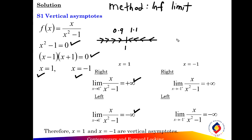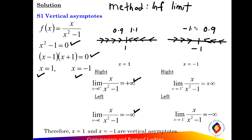For the second value, x equals negative 1. From the right of the function, the nearest value is negative 0.9, and from the left, negative 1.1. Substitute negative 1.1 into the function: the infinite limit equals negative infinity. Substitute negative 0.9: the infinite limit equals positive infinity. So x equals positive 1 and x equals negative 1 are vertical asymptotes of the rational function.